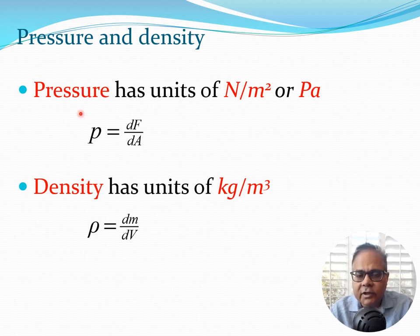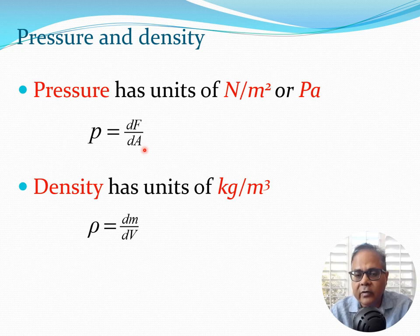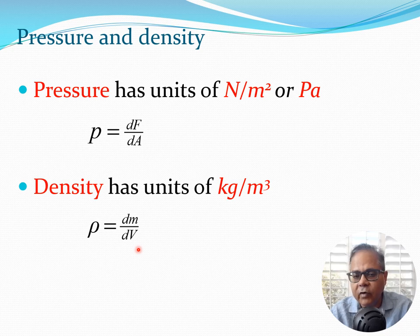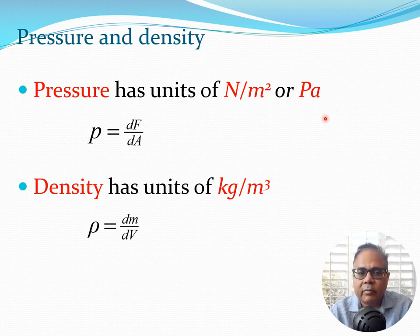Let's review some things you may already know from physics. Pressure has units of newton per meter squared, because pressure is defined as dF/dA — the derivative or rate of change of force with respect to area. Density has units of kg per meter cubed; at any point, rho equals dm/dV, where capital V is volume and small v is velocity, and m is mass. The unit of pressure is also known as the Pascal, in SI units.